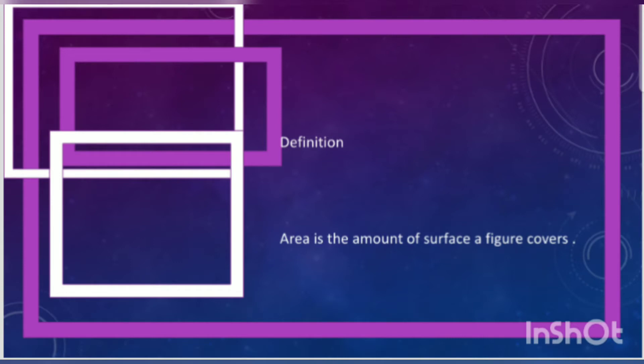Area can have different amounts like four squares, eight squares, nine squares. Without counting or wasting time, there are shortcut methods of finding area. Area is the amount of surface.